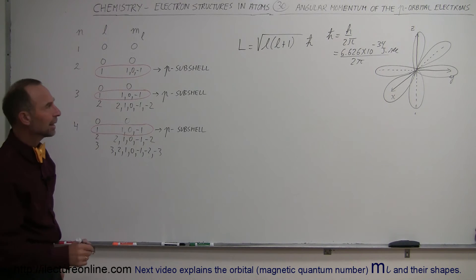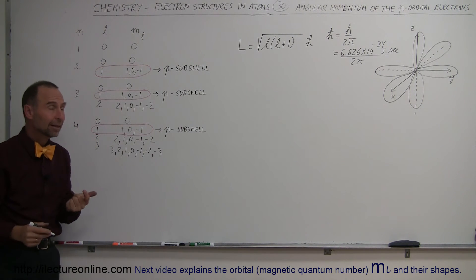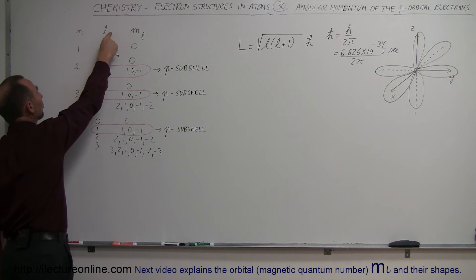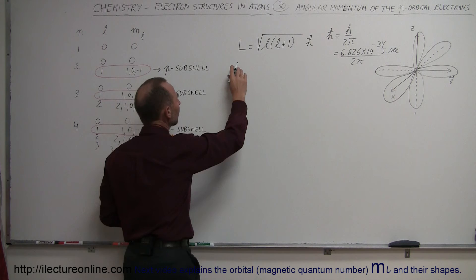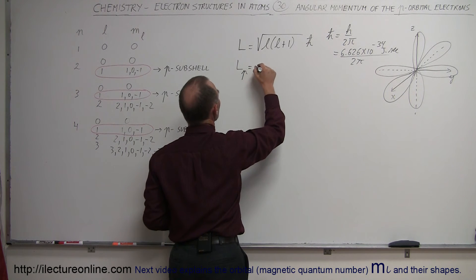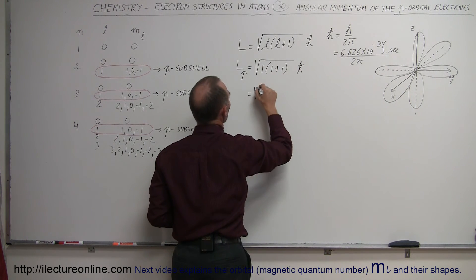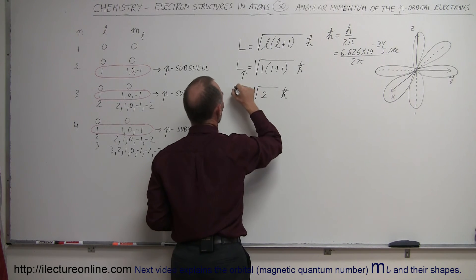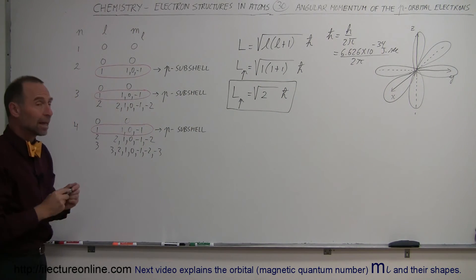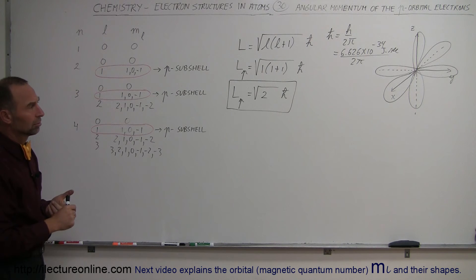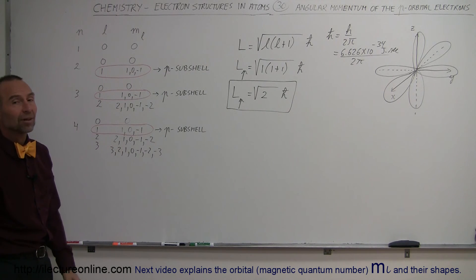If we're now going to find the angular momentum of electrons in the p-orbitals, notice that each of the p-orbitals, regardless of what energy level they're in, is determined by the angular momentum quantum number L being equal to 1. So the angular momentum L equals the square root of 1 times (1 plus 1) times ħ, which equals the square root of 2 times ħ. That is the angular momentum of the electrons in the p-orbitals.